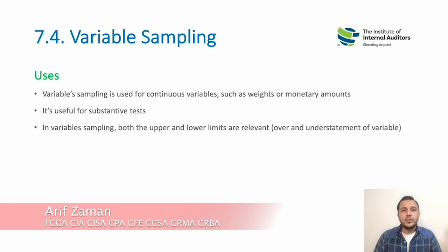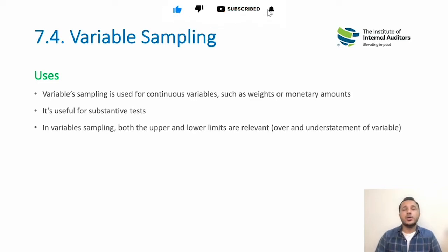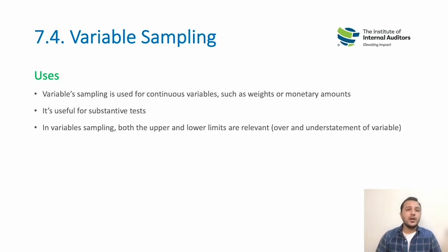In terms of variable sampling, we use it where we have a continuous number — where we have a lot of data, information, or transactions where we have to review a value or quantity and give our opinion. For example, account receivable, accounts payable values, or the number of stocks. In that case, the best sampling approach is variable sampling, and it is mainly used for substantive testing.